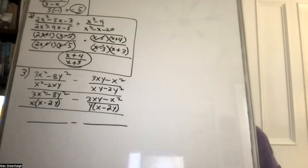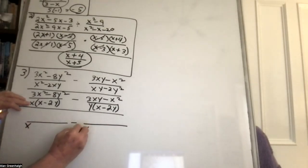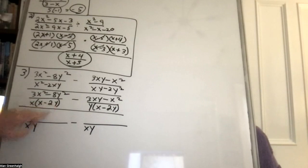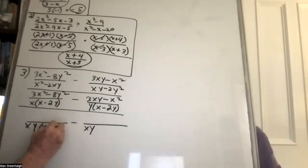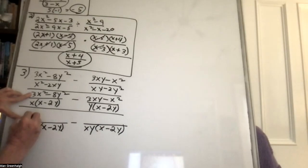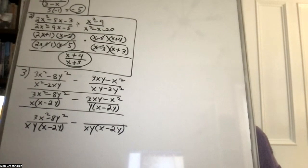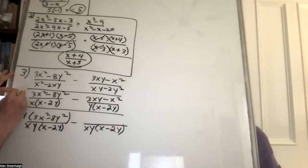So we're going to create a common denominator. It's got to have an x, a y, and x minus 2y. To get from this denominator to the least common denominator, we're missing the y, so we multiply everything by y — like y over y. When we multiply the numerator and denominator by y over y, we get the common denominator.